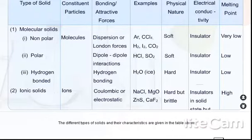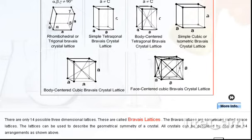Types of solids. The different types of solids are crystal lattices and unit cells. There are only 14 possible three-dimensional lattices. These are called Bravais lattices. The Bravais lattices are sometimes called space lattices. The lattices can be used to describe the geometrical symmetry of a crystal. All crystals can be described by one of the 14 arrangements as shown above.